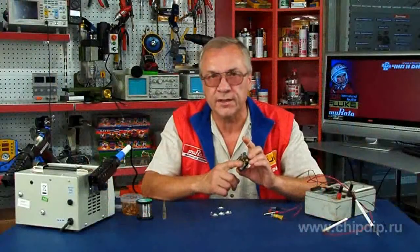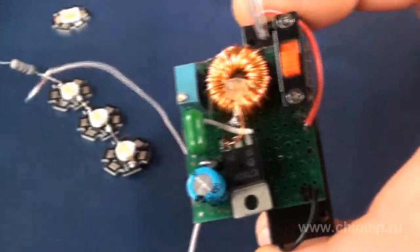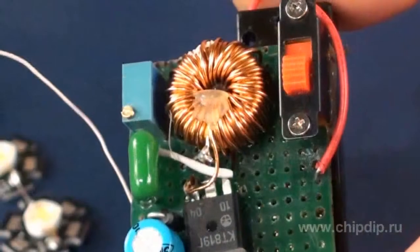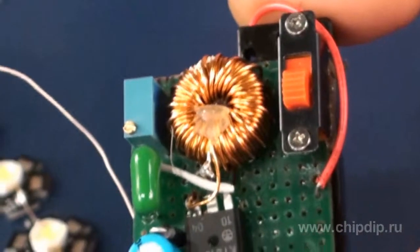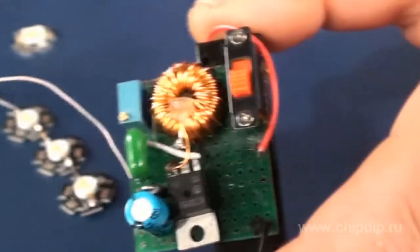So what does this circuit look like? First of all, there is a transformer manufactured on a 2000-grade ferrite ring. The primary winding contains 60 turns of 0.3mm wire, the secondary winding has 15 turns of the same wire.